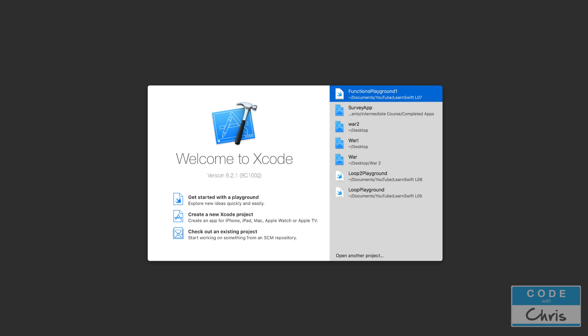Hello, welcome to Learn Swift for Beginners, Lesson 8. In the previous lesson, you learned about functions, how to declare them and how to call them. In this lesson, you're going to learn how to use them in an even more powerful way, by having your functions accept data and also return data to you when you call them. All right, let's see how that's done.